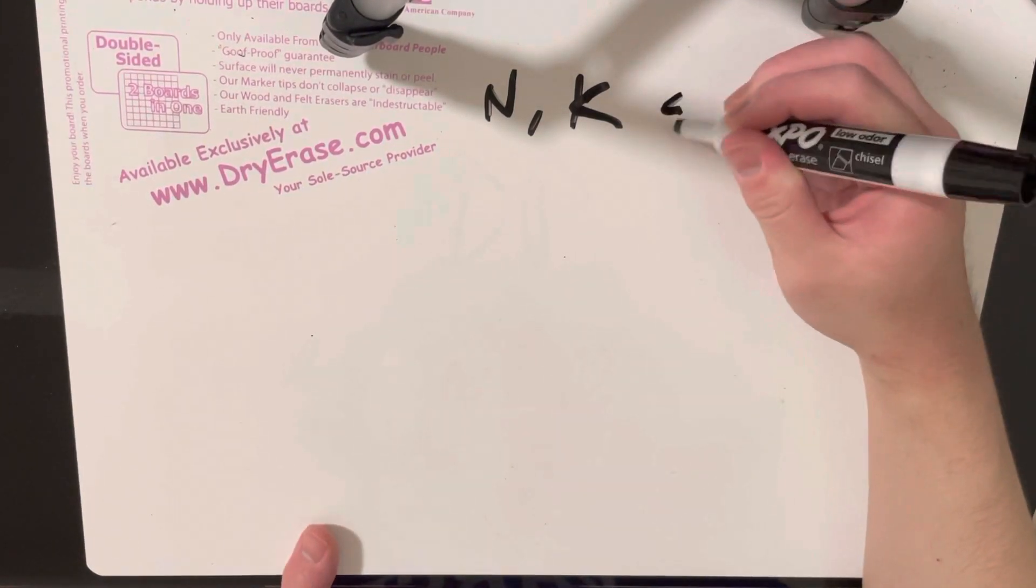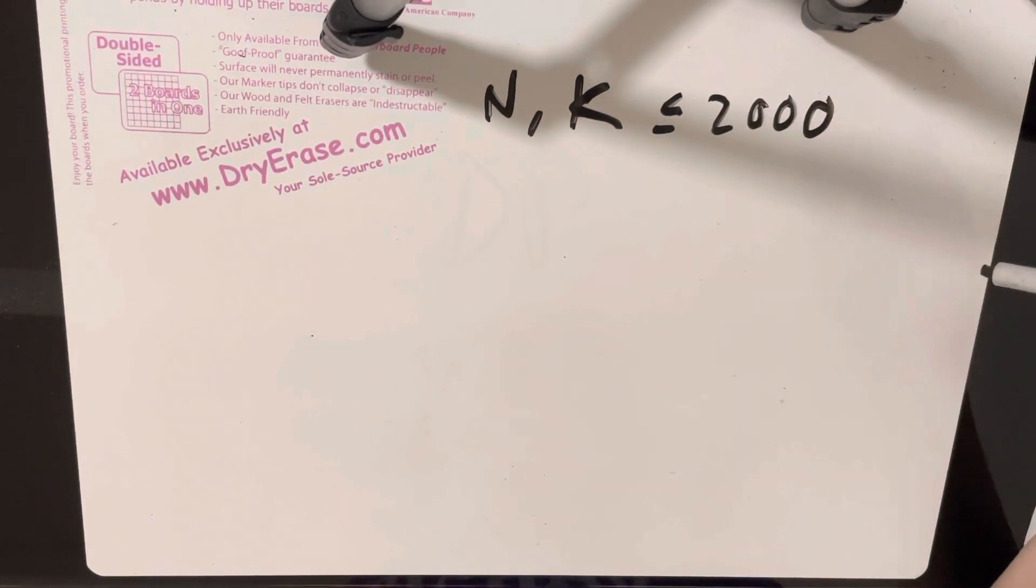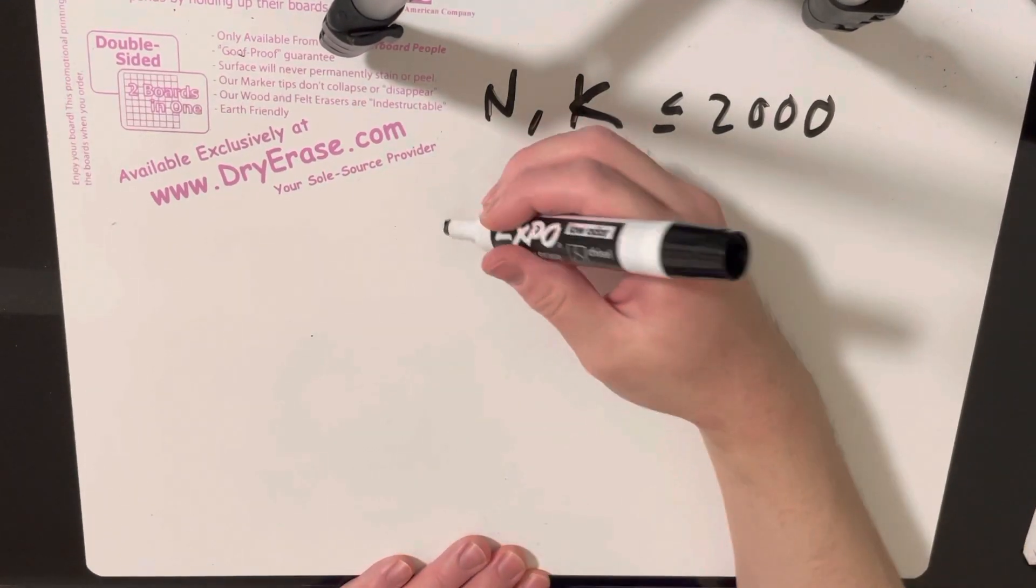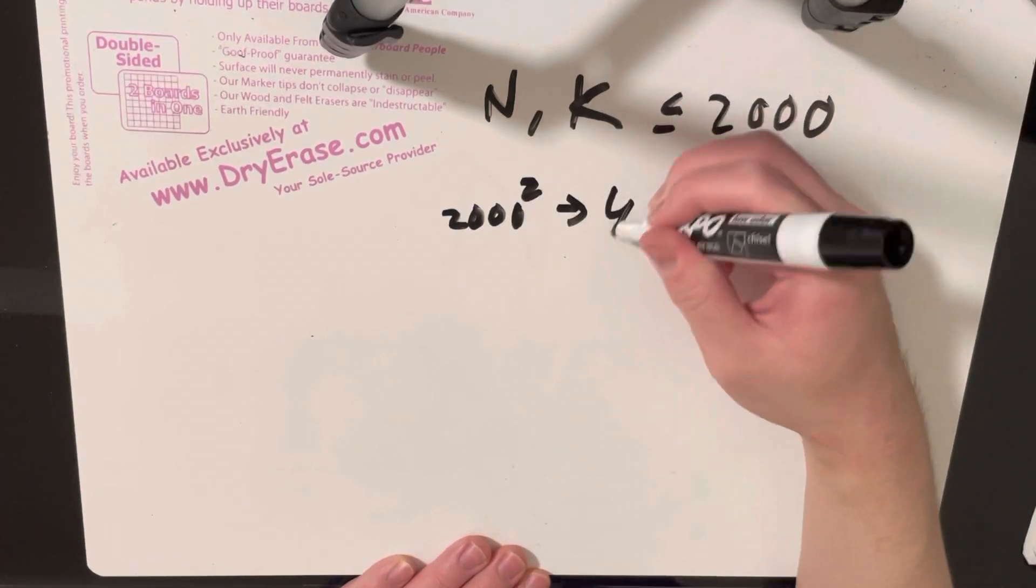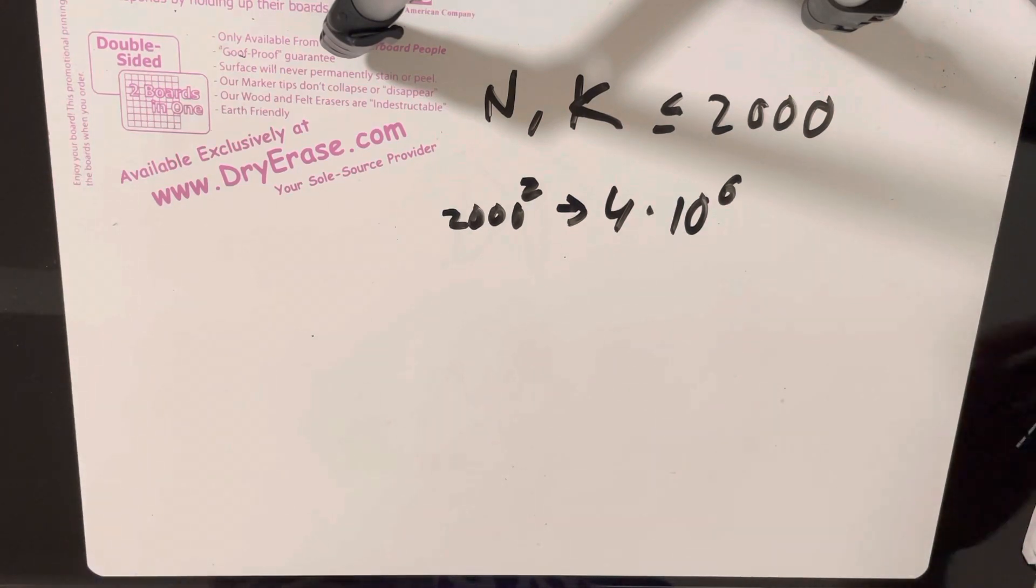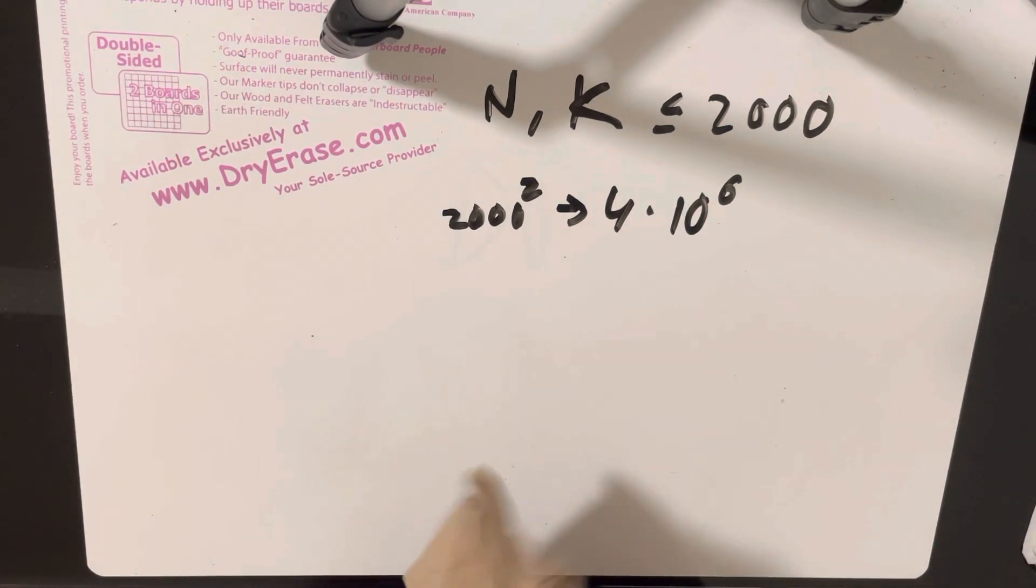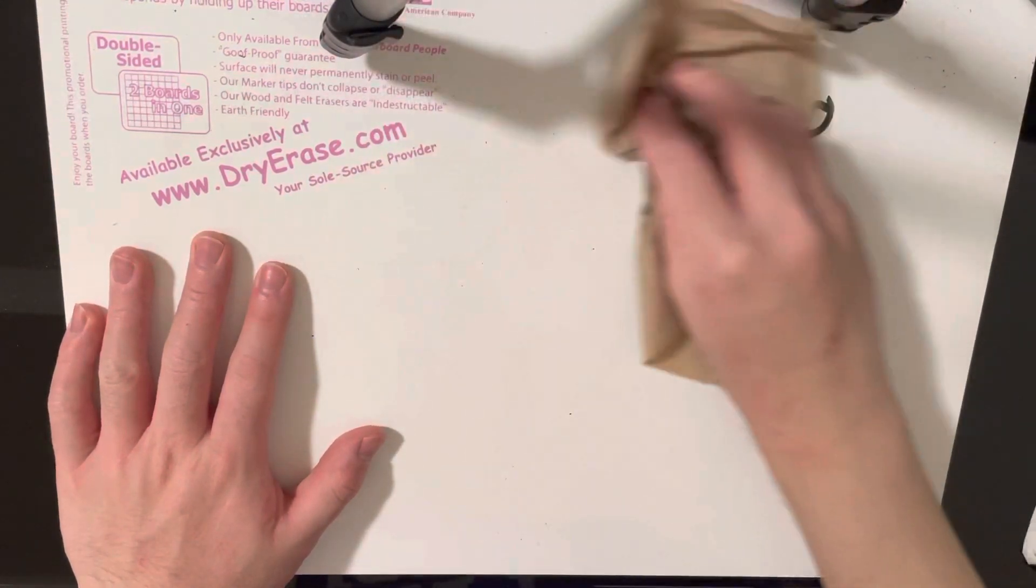And one thing you notice that n and k is less than or equal to 2,000. And this is small enough where you can have basically an n squared solution. Like 2,000 squared will work because this is basically 4 million, and 4 million is completely fine. Even with a one second time limit, this should not be a problem. So that's the first thing to notice.